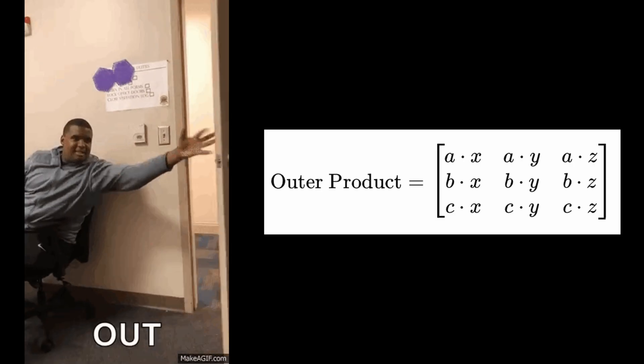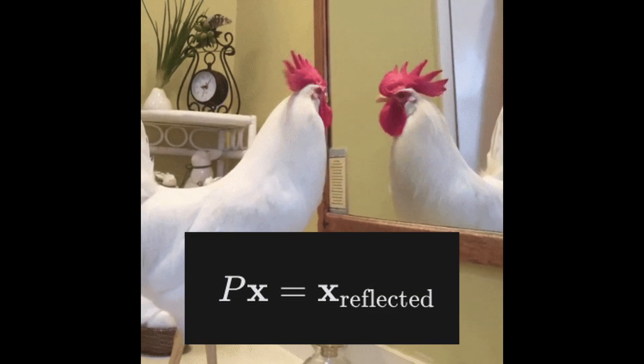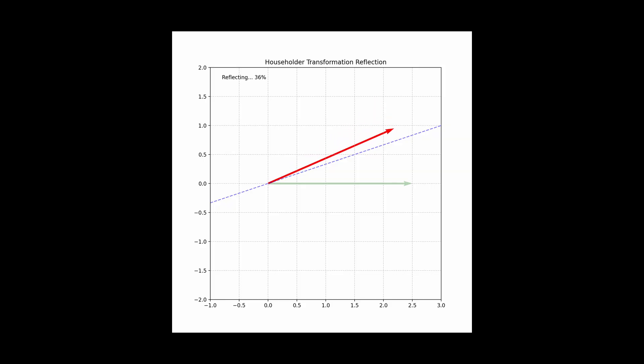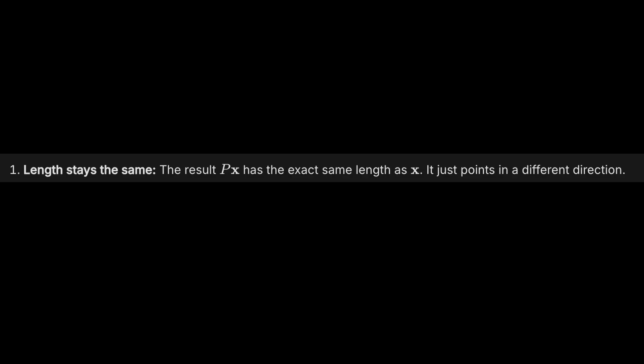So if you multiply any vector with this P matrix, which is the Householder matrix, it's gonna get reflected. It's just a standard rotation matrix. So P times x has the same length as x because P will just rotate it, not stretch or squish it.